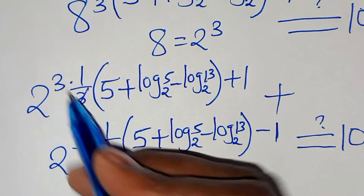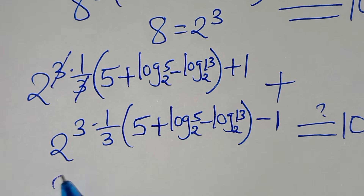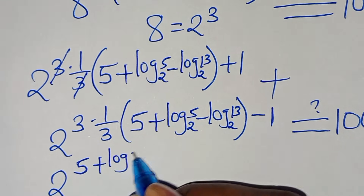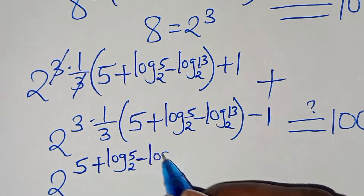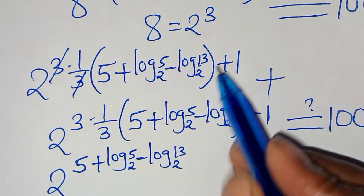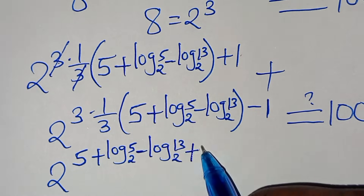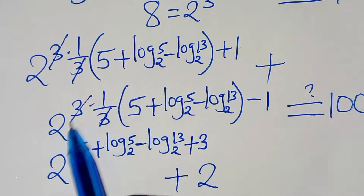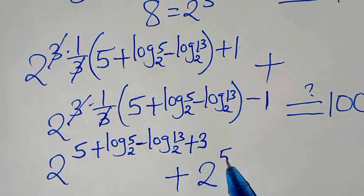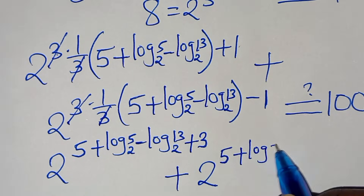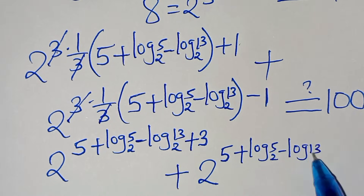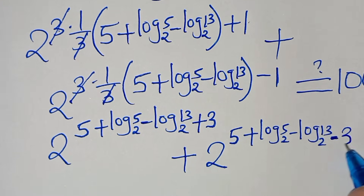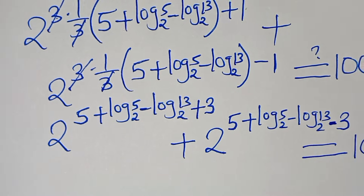Multiplying 3 by (1/3) simplifies to 1. The first term becomes 2 to the power of (5 + log_2(5) − log_2(13) + 3), and the second term becomes 2 to the power of (5 + log_2(5) − log_2(13) − 3). This should give 100.